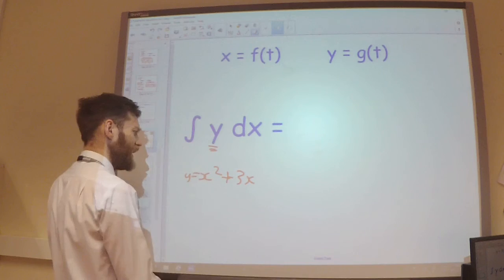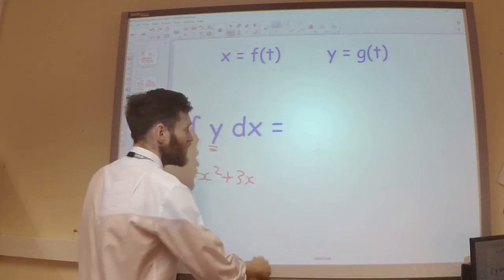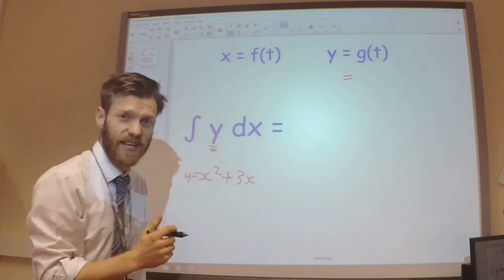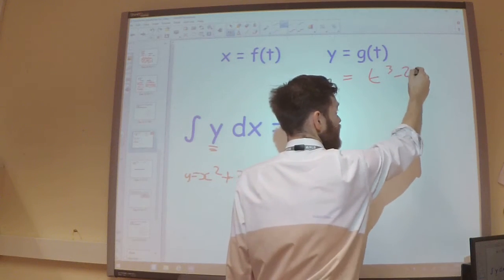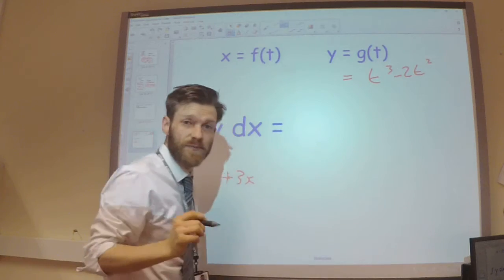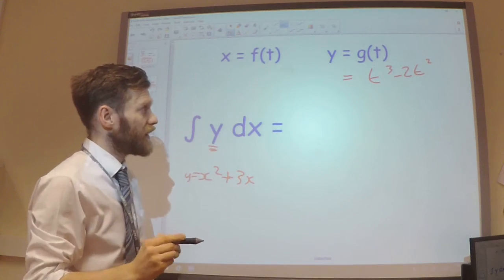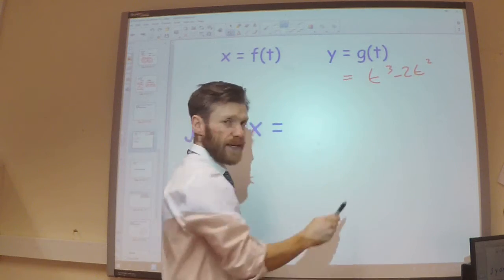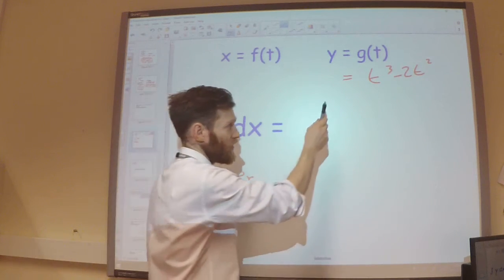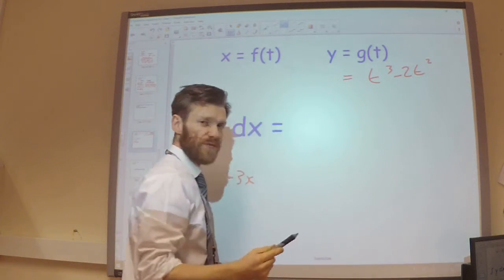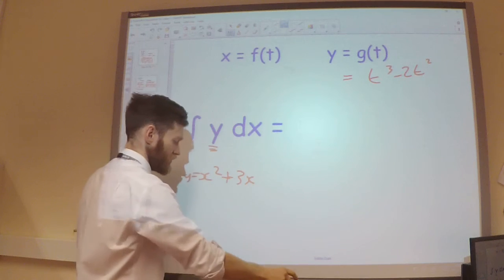Our problem here is that our y is expressed as a function of t, so it might be something like t cubed minus 2t squared. This is expressed in terms of t, not in terms of x. So I cannot integrate this with respect to x. It's not going to work.